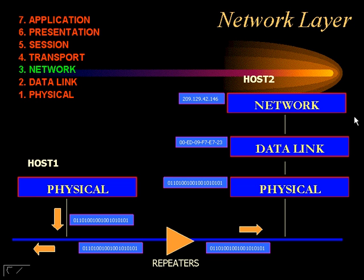IP is a routed protocol, which means that it's what allows the transmission of data from point A to point B. It's that protocol that we support when we're trying to do networking. Everything else is in support of it. TCP, which is basically the connection-oriented portion of TCP/IP, is in support of IP.